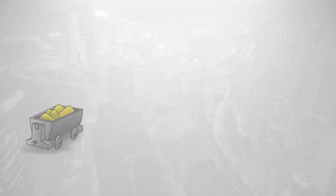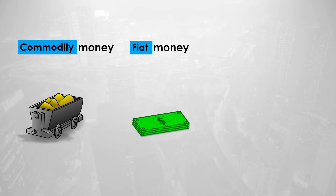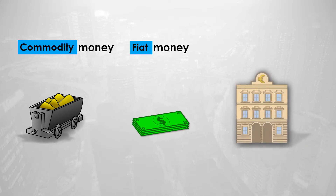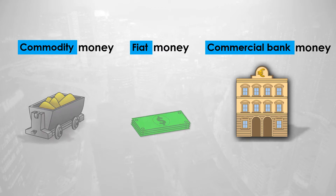Money falls into three main categories: commodity money, such as gold, silver or other precious items; fiat money, or currencies like the US dollar or the euro; and probably the most popular form of money, commercial bank money — basically loans. We will cover this topic separately in another video. In this video, we will focus on the difference between the first two categories, commodity money and fiat money.